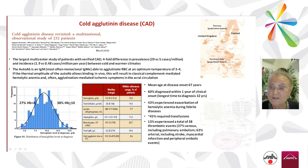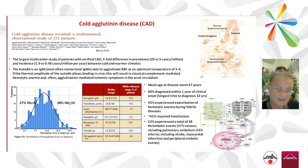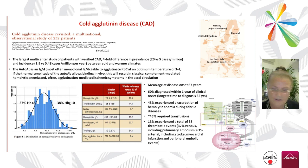There are generally exacerbations of hemolytic anemia during febrile illness, because complement is activated during infections. About 45% required transfusions, and 30% experienced thrombotic events — some patients had more than one event — including pulmonary embolism, stroke, and myocardial infarction.